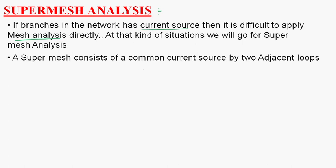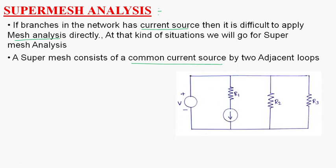Super mesh analysis consists of a common current source shared by two adjacent loops. Let us consider this circuit — there is a voltage source and three resistors. If you want to find the loop current along this loop, it is somewhat difficult. Why? Because here some current source is present.